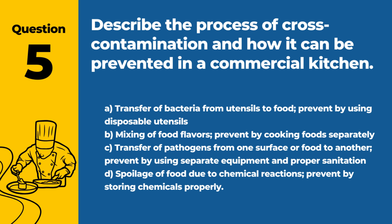Question 5: Describe the process of cross-contamination and how it can be prevented in a commercial kitchen. a. Transfer of bacteria from utensils to food; prevent by using disposable utensils. b. Mixing of food flavors; prevent by cooking foods separately. c. Transfer of pathogens from one surface or food to another; prevent by using separate equipment and proper sanitation. d. Spoilage of food due to chemical reactions; prevent by storing chemicals properly. Answer: c. Cross-contamination is the transfer of harmful pathogens from contaminated surfaces or foods to uncontaminated ones, and can be prevented with separate equipment and thorough sanitation.